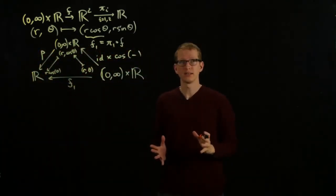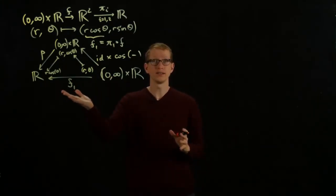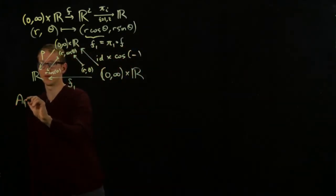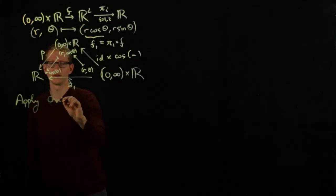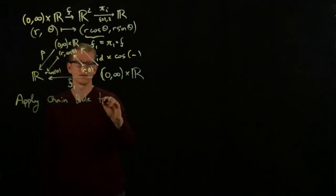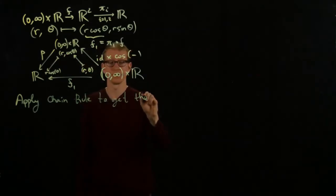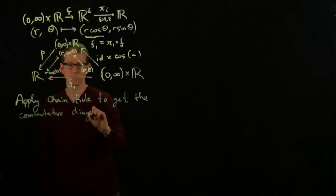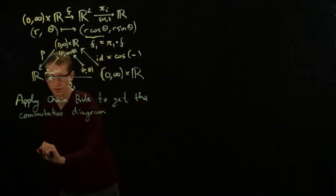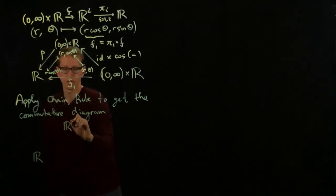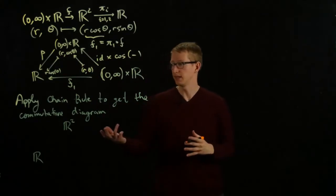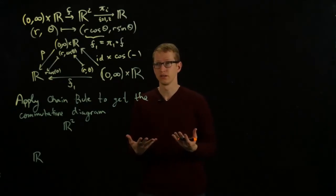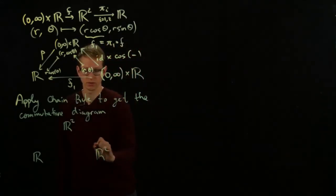Now, the chain rule applies, and we know that the derivative of F₁ is equal to the composition of the derivatives of each of these two functions. So apply the chain rule to get the commutative diagram. Remember that when we apply D, we change the domains so that we have the entire vector space available to us.